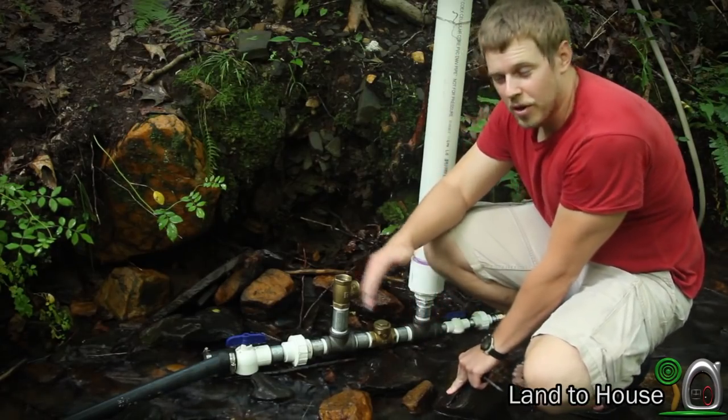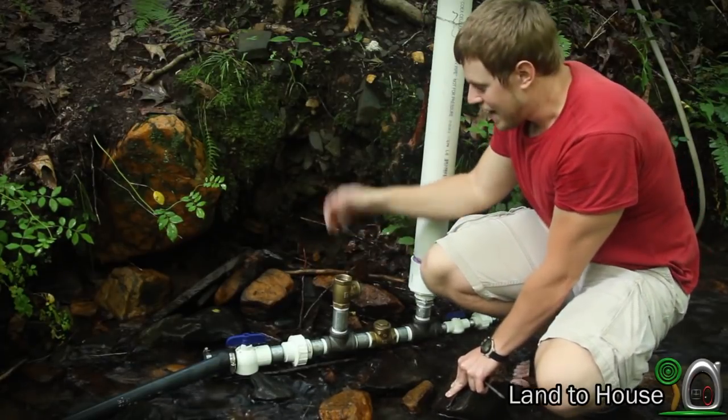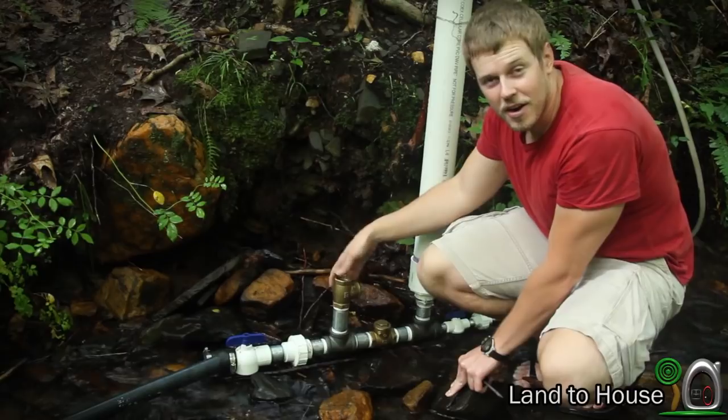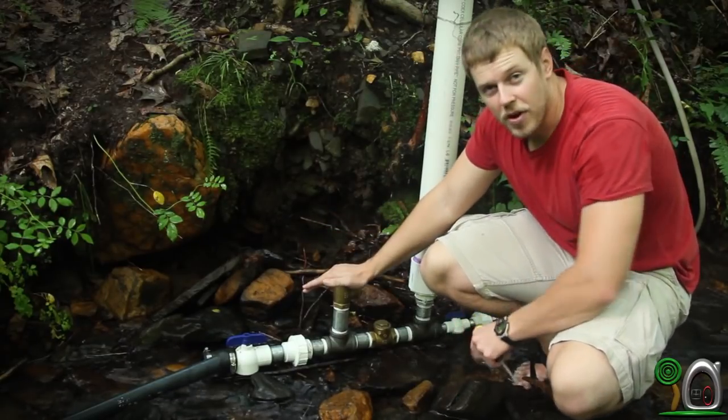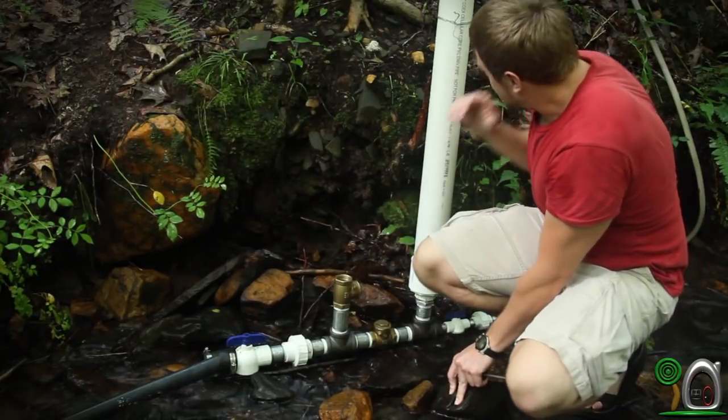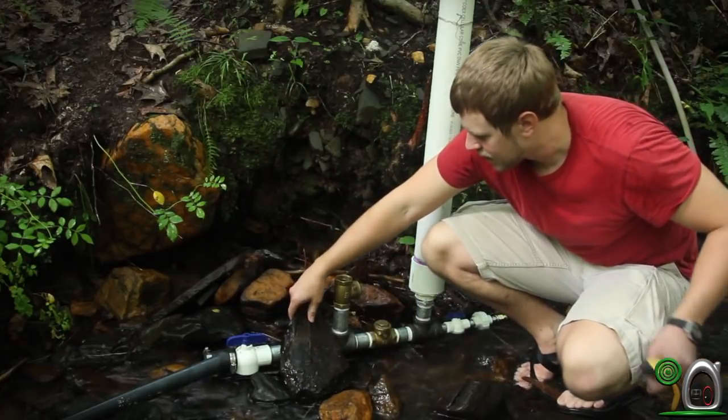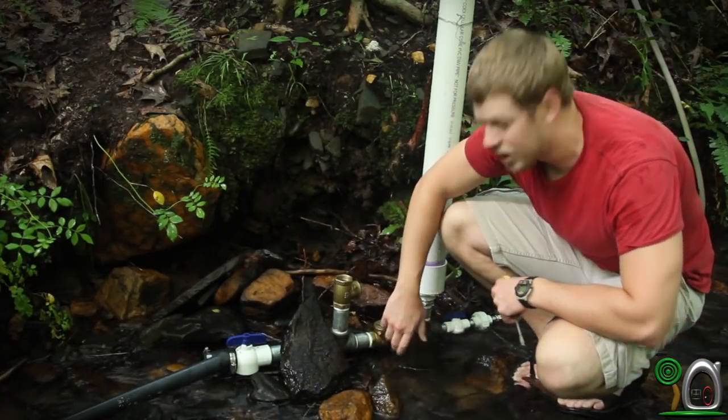First, we'll start by placing our flex tubing into the creek. I already have 100 feet set up for my system, so we're going to use that. When you place your ram pump, you want to make sure that it's facing as straight up and down as you possibly can. That's because these little flaps inside of here need to be able to fall down straight with gravity. So just make sure you can secure it to some place and then use rocks or something to make sure it doesn't go anywhere.